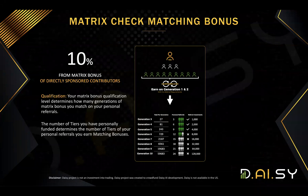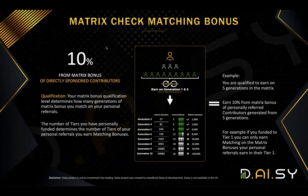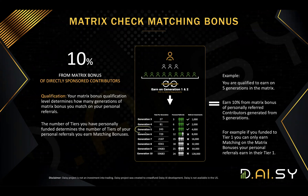The matrix check matching bonus works as follows: if you refer someone who is building their matrix, you will get 10% of all their matrix income. However, you have to be qualified for those generations you will get a share from. If you are qualified for generation five, you will earn 10% of all the matrix income your direct referral makes with five generations — even if they are earning from seven generations, you will only get 10% of earnings from the five generations you are qualified for.